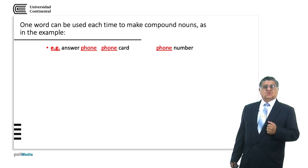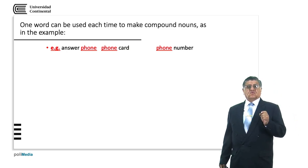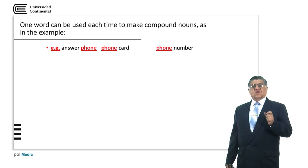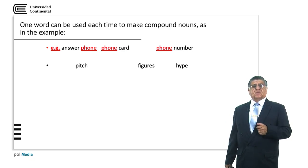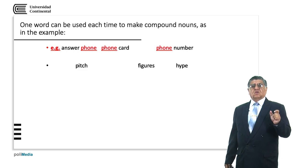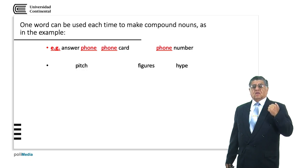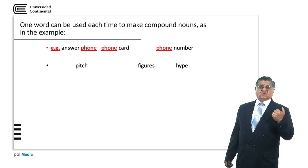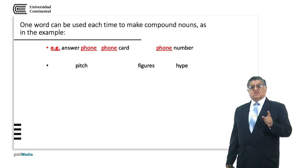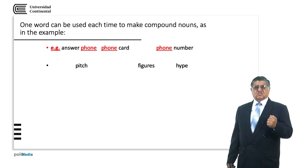Now we can use one word to make compounds. For example: 'phone card' or 'phone number' — we have the word 'phone' and we are using it with 'card' and with 'number' as pre-modifier or post-modifier. Pre-modifier means it goes before the word; post-modifier means it goes after the word.